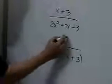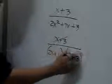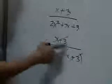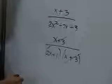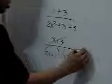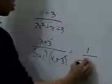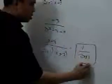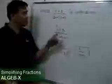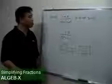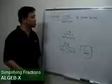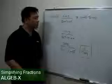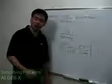Now, we can cancel this x plus 3 here and then this x plus 3 here, because they can be considered as single terms, leaving us with 1 over 2x plus 1. So this is the equivalent fraction, equivalent to x plus 3 over 2x plus 7 times x plus 3, but in lowest terms.